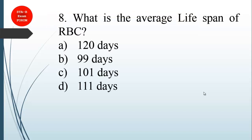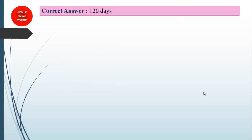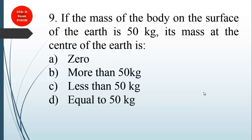What is the average lifespan of RBC? This is from biology. You should know that the average lifespan of RBC is 120 days. The correct answer is 120 days.